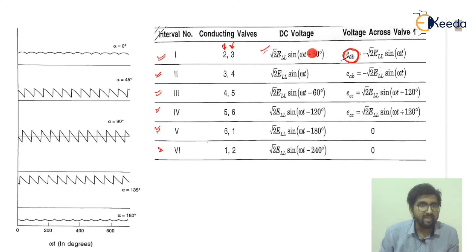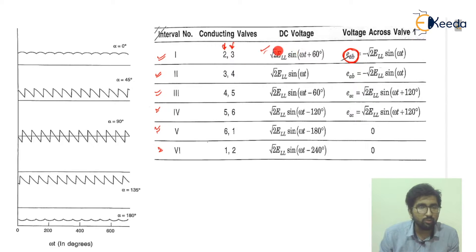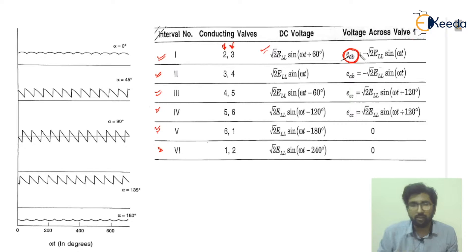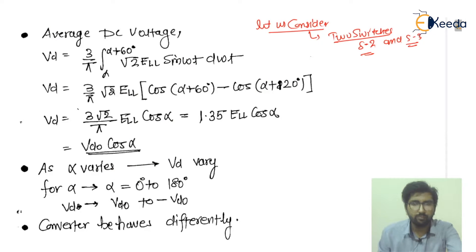When operating with conducting valves two and three, that DC voltage is going to be root 2 · ELL · sin(ωt + 60°). Since we are considering VBA — which is the minus of VAB — and taking the voltage across load, VBA will have the positive sign. So please remember: root 2 · ELL · sin(ωt + 60°).